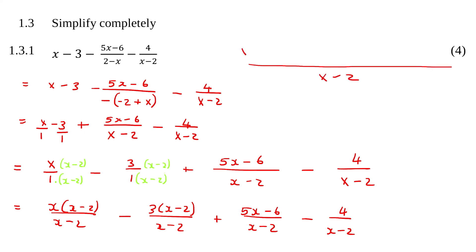So we're going to have x times x minus 2 minus 3 times x minus 2 plus 5x minus 6 minus 4. Now we are going to multiply the brackets out.